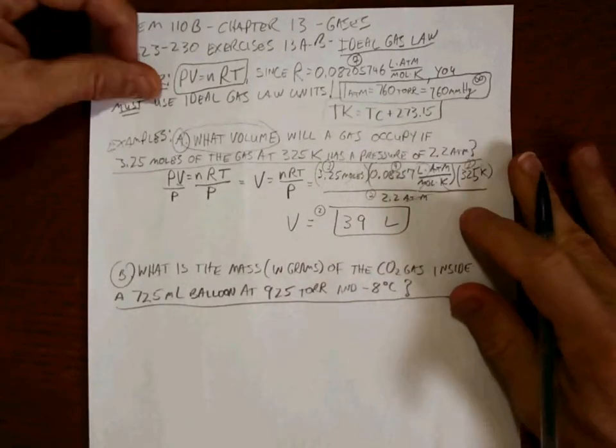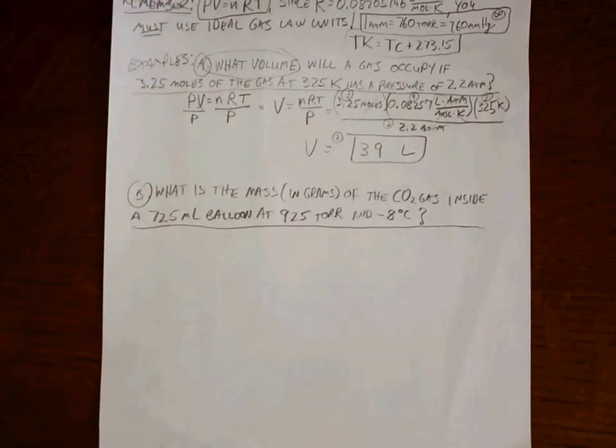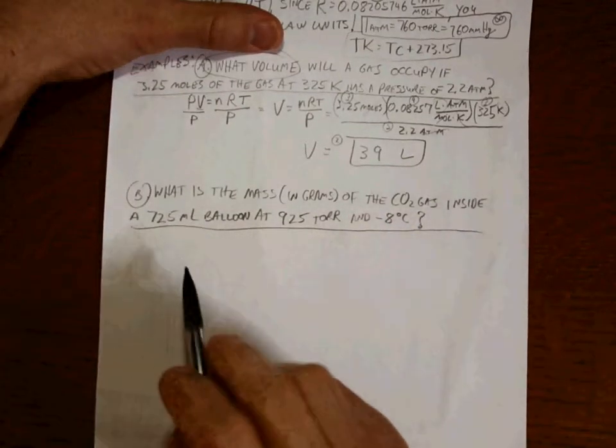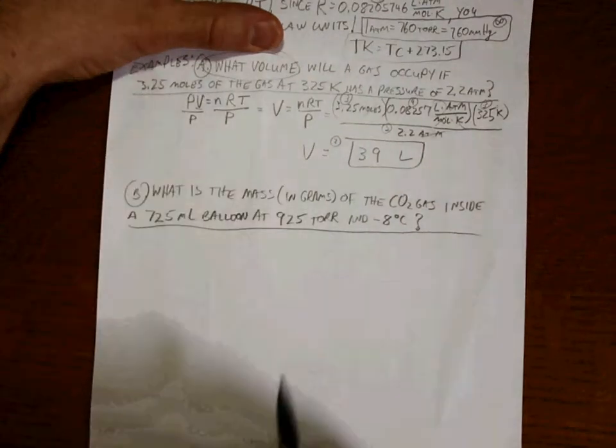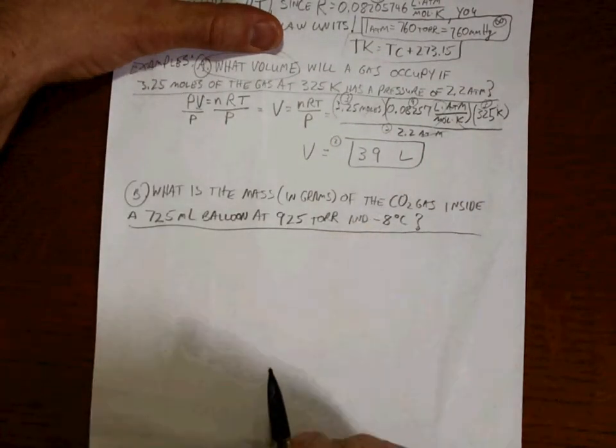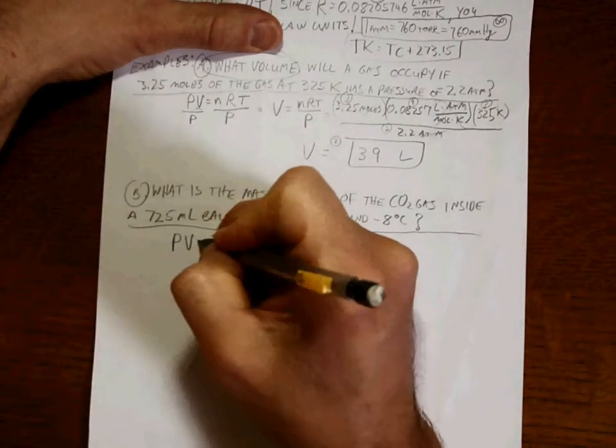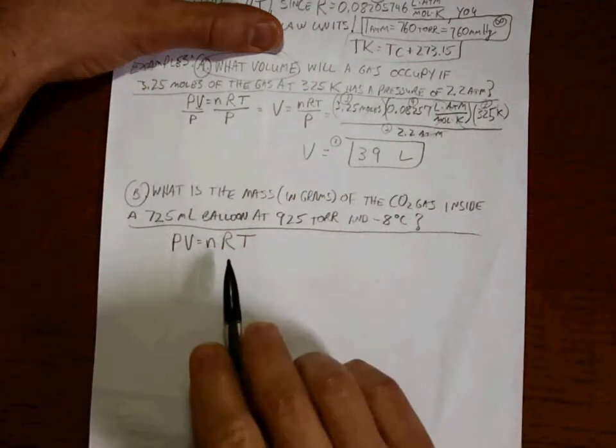Not too bad. So let's try the next one. What is the mass in grams of the carbon dioxide gas that's contained inside a 725 milliliter balloon at 925 torr and negative 8 degrees Celsius? I know I've got gases going on where I actually have gas, so I have to deal with that.